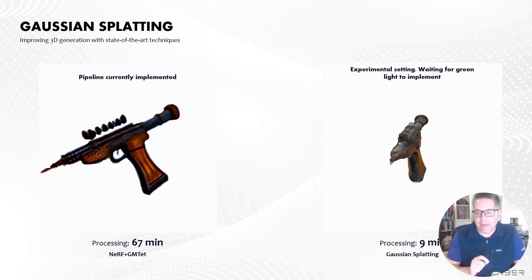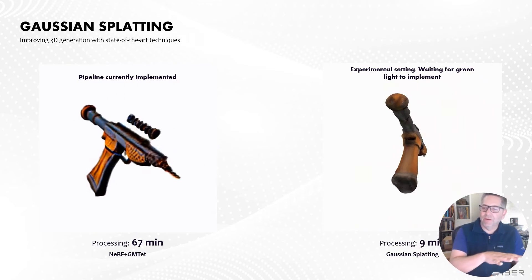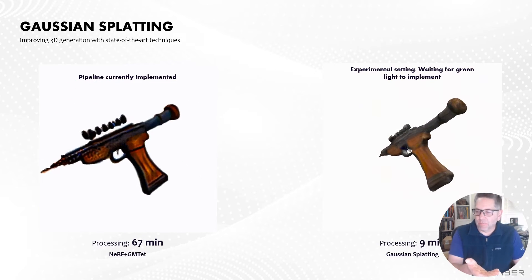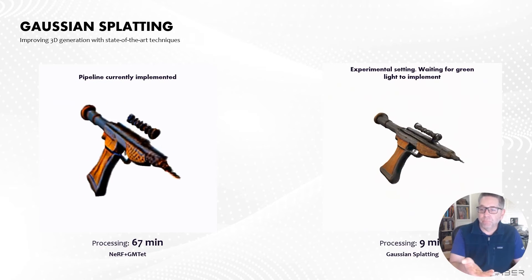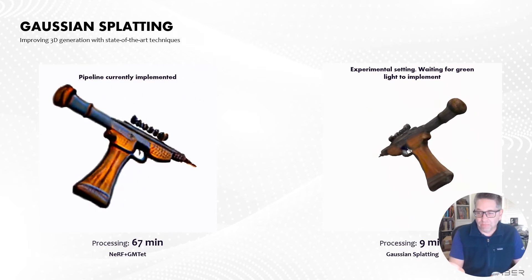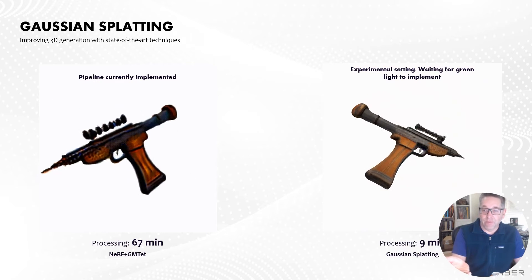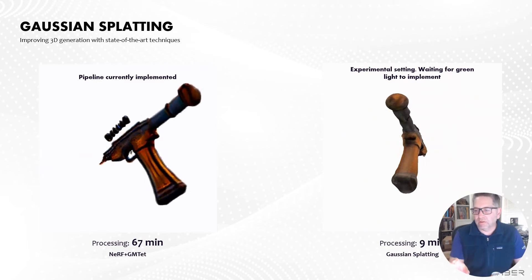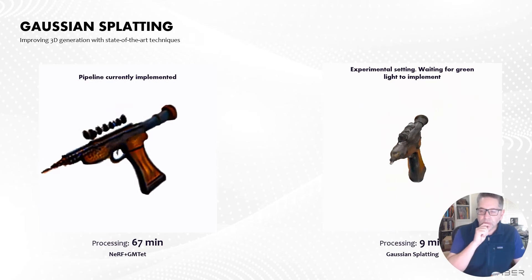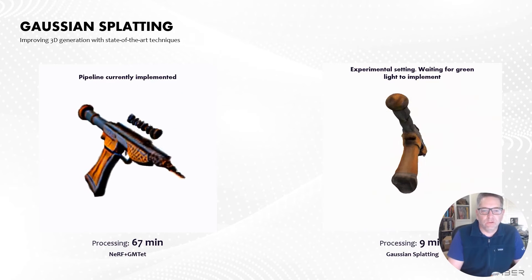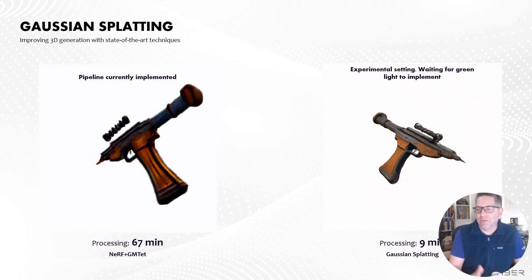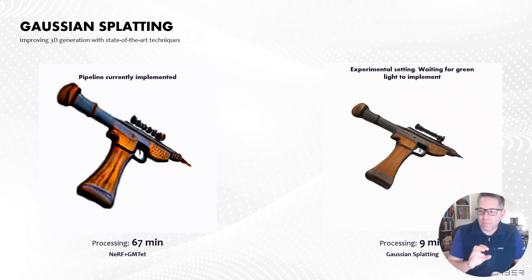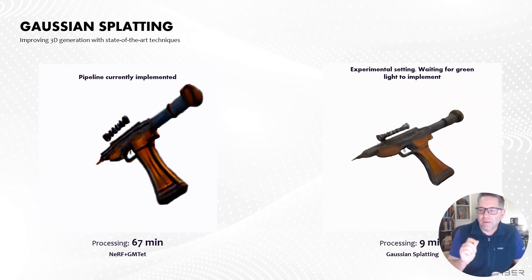Then Gaussian splatting came into the picture. All those NeRF-based techniques took a while — about 67 minutes to generate the 3D point cloud and texture. Gaussian splatting lets us do it a lot faster, more than an order of magnitude faster — like nine minutes for this one. It's the same set of data but a different math technique for the model to generate the output. It doesn't look as good, but we're still optimizing and it's still an interesting result.